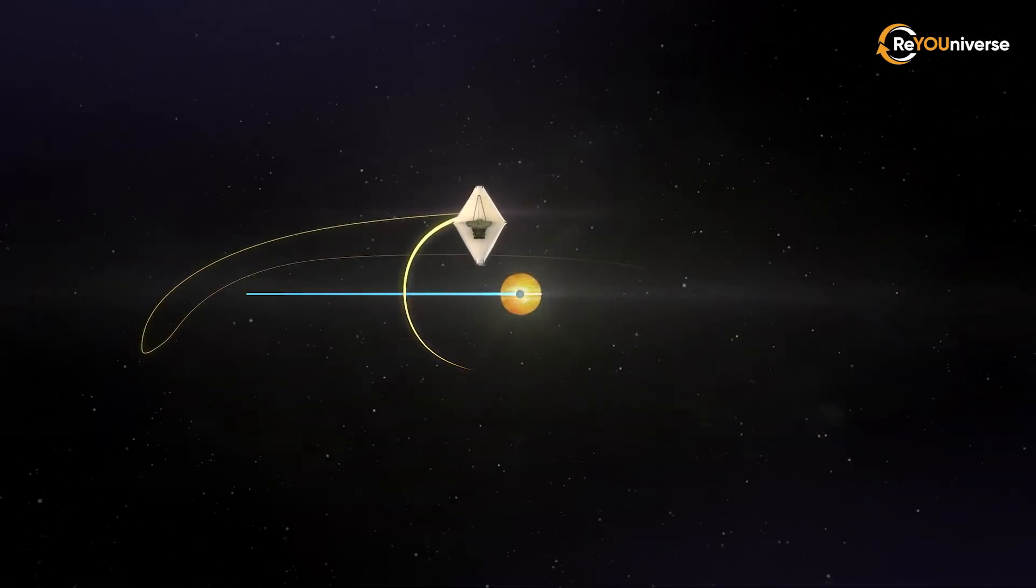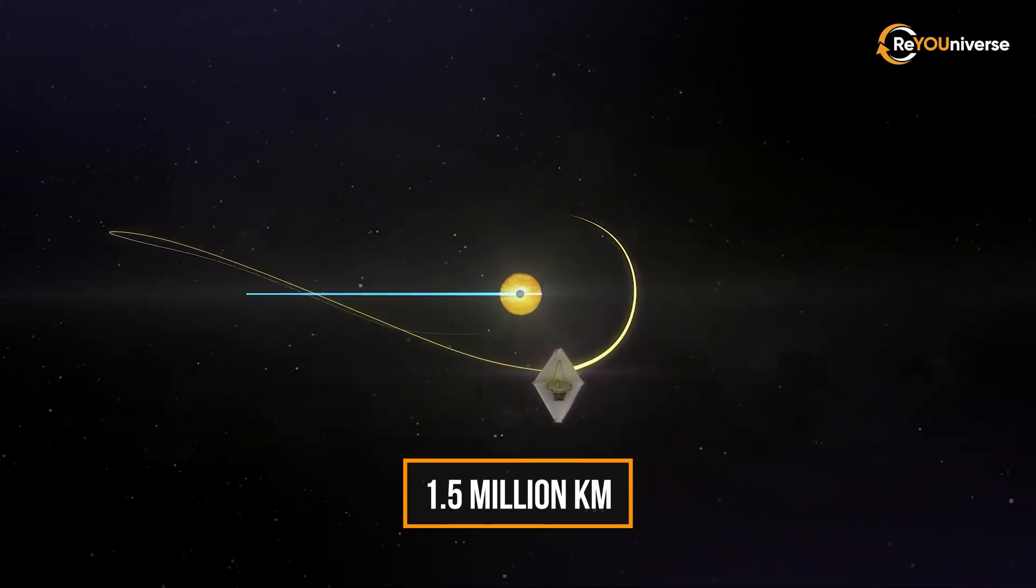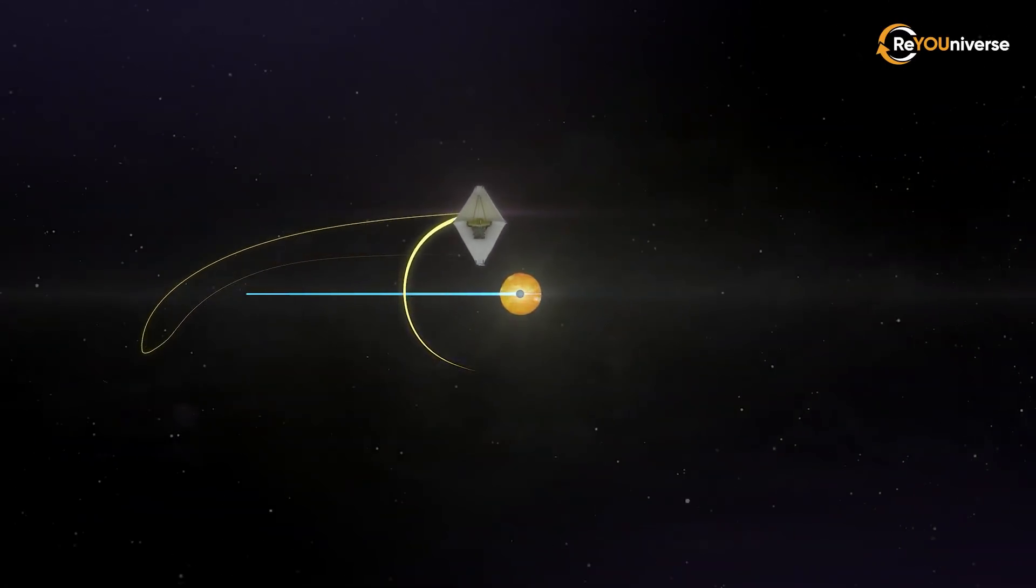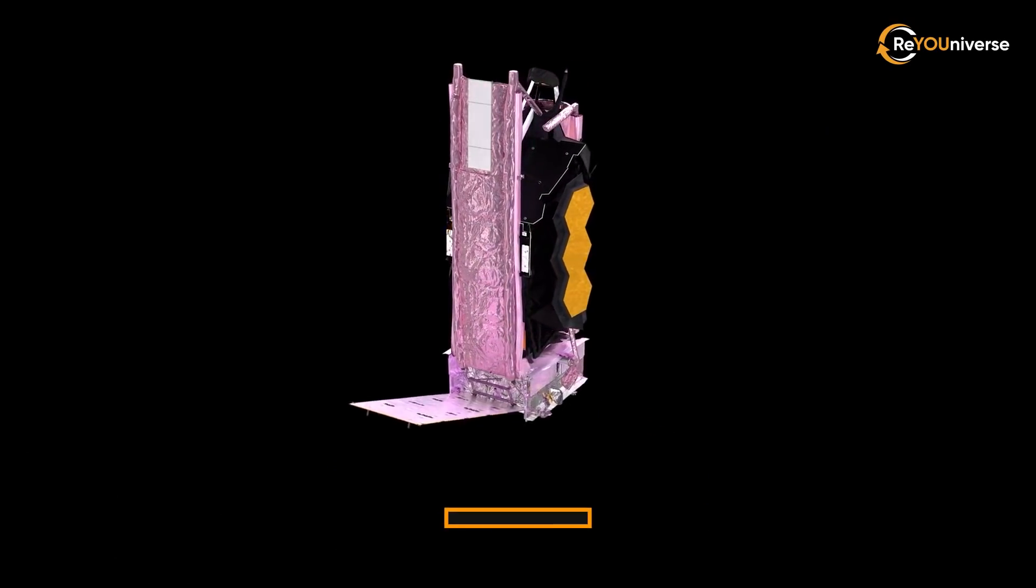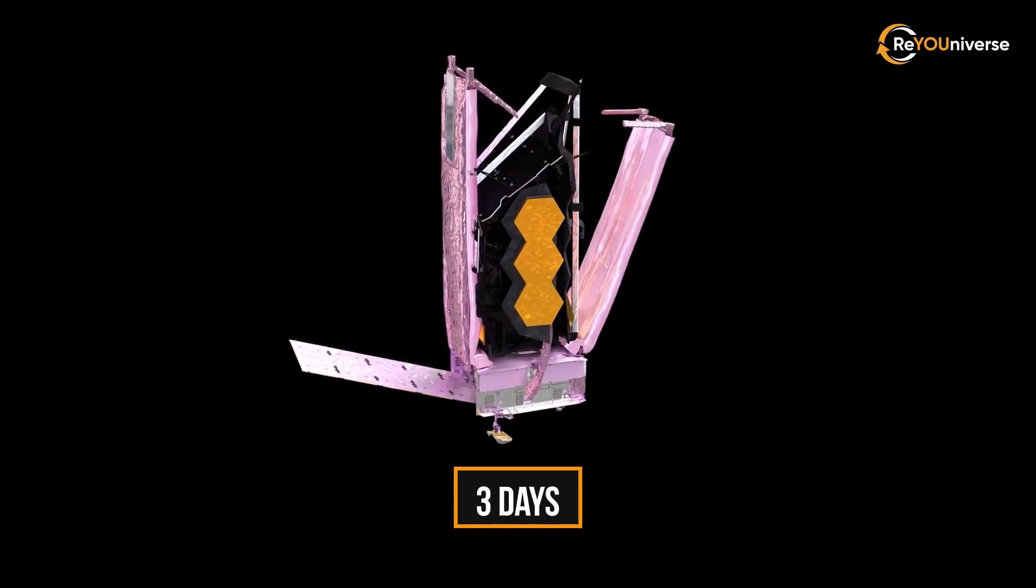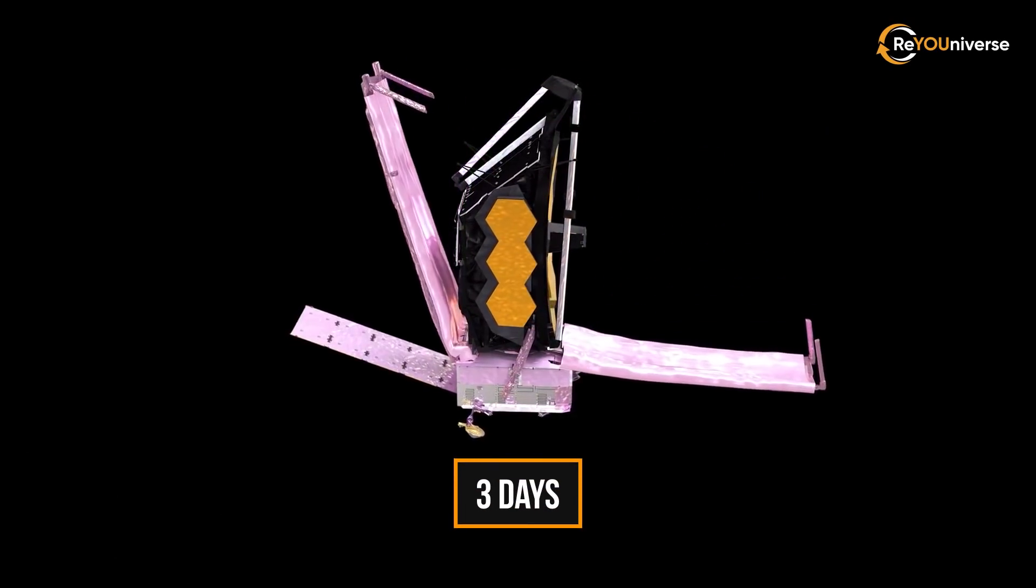The distance from the telescope to Earth will reach 1.5 million kilometers. Such a long distance means there won't be any way to upgrade or renovate it, as was possible with Hubble.